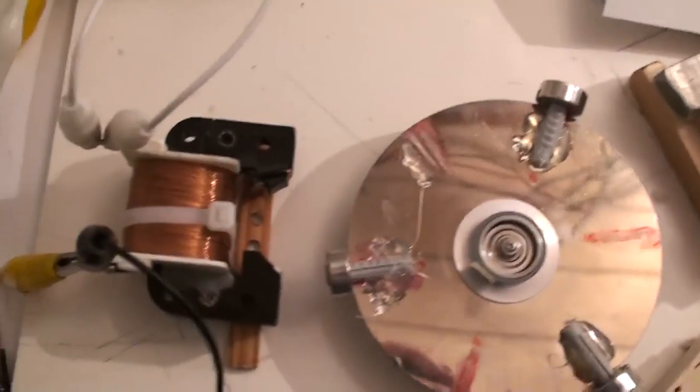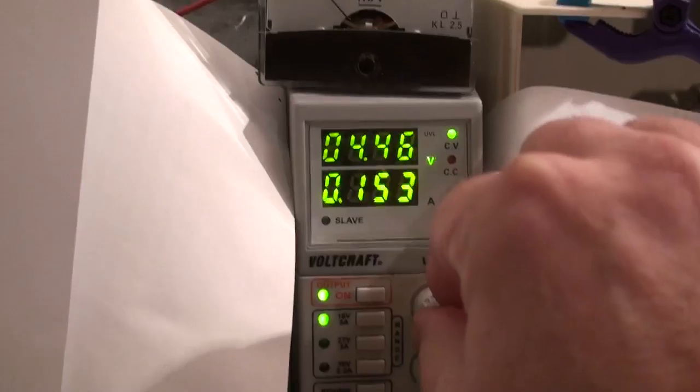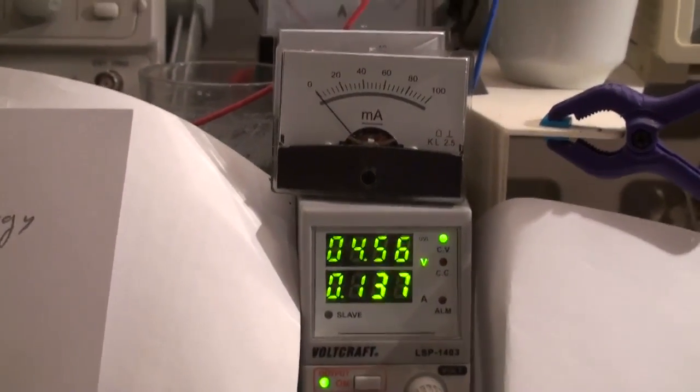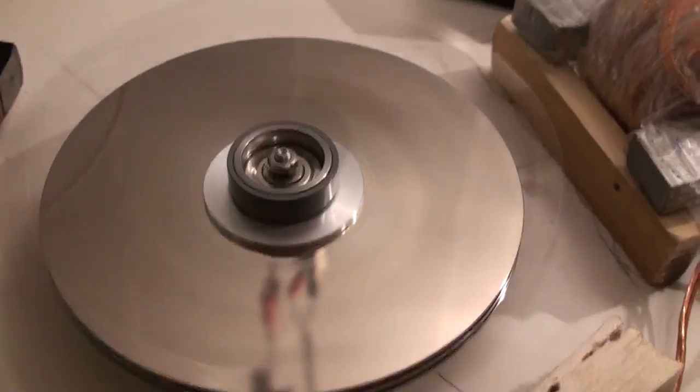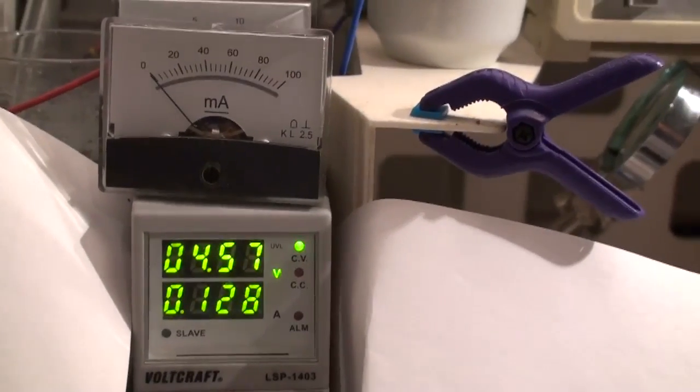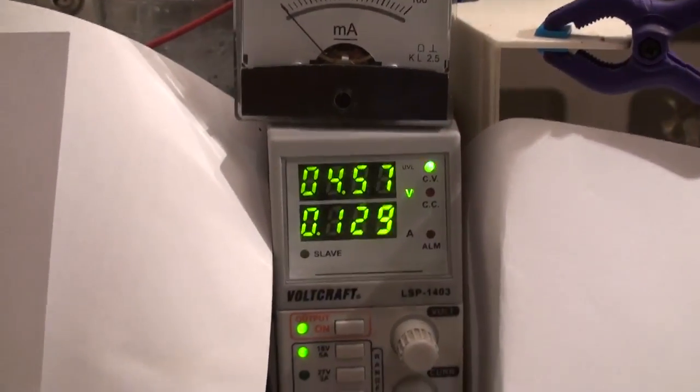Okay, first we'll try to see how much power the assistant coil has. We'll set it to about 4.5 volts and wait for the rotor to reach good speed. You can see the trace here on the scope, and we have about 120 milliamps.